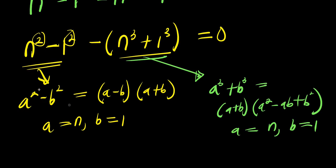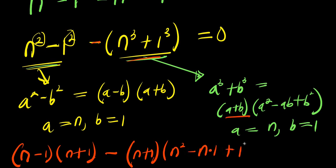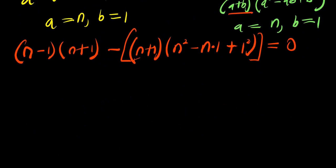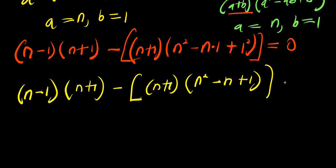These are the two identities we are going to use. Applying the difference of two squares gives (n minus 1)(n plus 1). Then minus, applying the sum of cubes gives (n plus 1)(n squared minus n times 1 plus 1 squared). Setting this equal to zero.